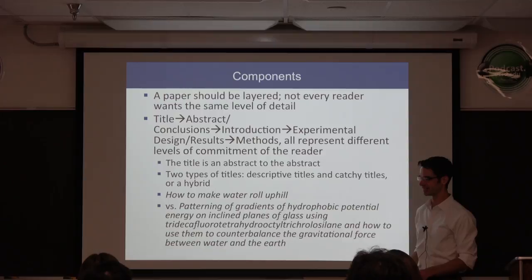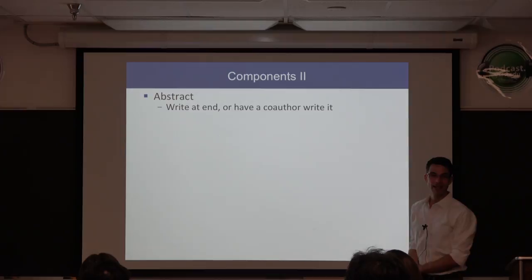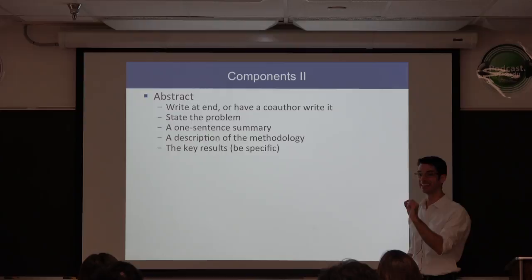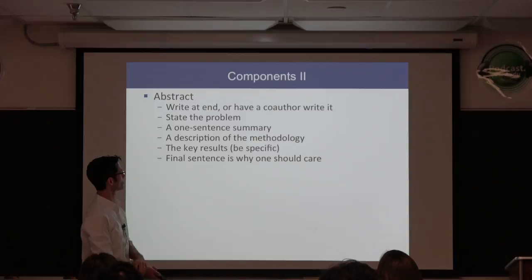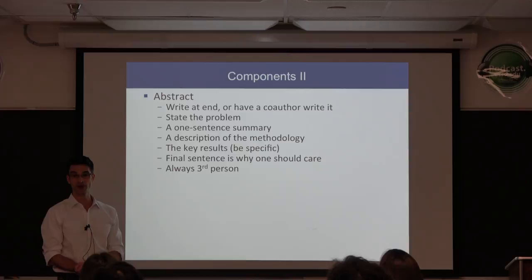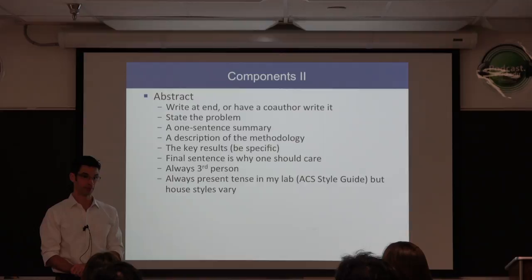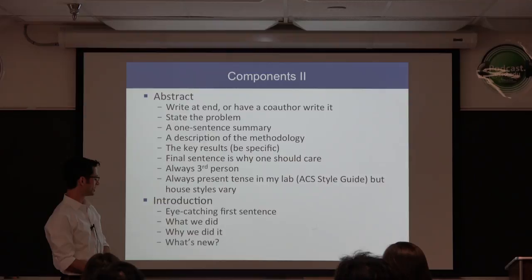The abstract comes first but is the last thing written — because we don't know what's in the paper yet. State the problem, give a one-sentence summary, a description of the methodology, the key results, and be specific — including key numbers and values. The final sentence should say why one should care about the results. Always in the third person; in the ACS style guide, the abstract is written in the present tense, which is different from the rest of the paper. Eye-catching first sentence: what we did, why we did it, what's new, and who cares.